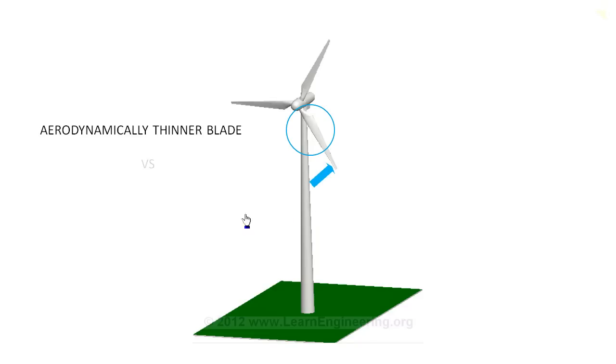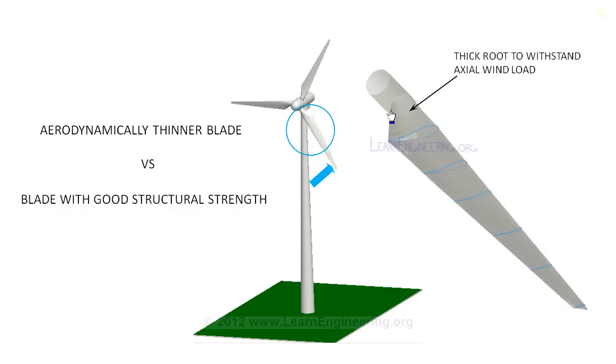So generally wind turbines with 3 blades, which can accommodate a thicker root, are used.